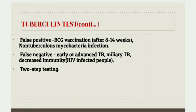The tuberculin test can be false positive after 8 to 14 weeks of BCG vaccination and in case of non-tuberculous mycobacteria infection. False positive means the results say you have the condition but you really don't. The test becomes false negative in case of early or advanced TB, miliary TB, and HIV patients with decreased immunity. False negative means the results say you don't have the condition but you really do.